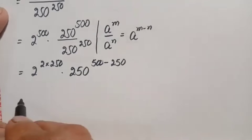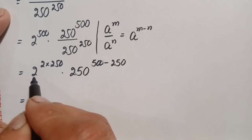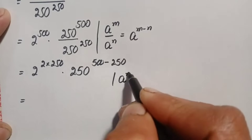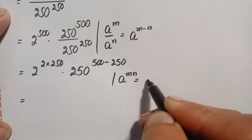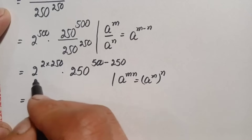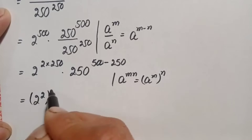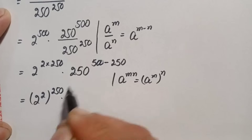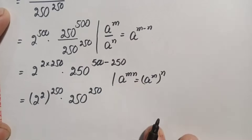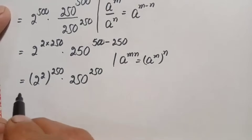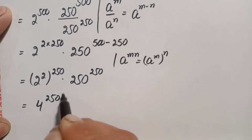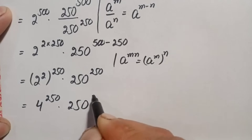Times 250 raised to power 500 minus 250, which gives 250. Now here we will use another exponential identity: a raised to power m times n, which can also be written as (a raised to power m) raised to power n. Using this identity, we can write 2 raised to power 2, all raised to power 250. Now 2 raised to power 2 is simply 2 times 2 which is 4, so this becomes 4 raised to power 250.